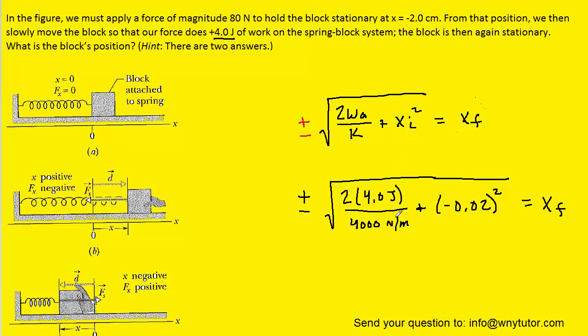And when you crunch that all down on your calculators, you should get approximately plus or minus 0.049 meters. And if you needed to convert that back into centimeters, you could say plus or minus 4.9 centimeters. So that would be the correct answers for the final position in either centimeters or in meters.